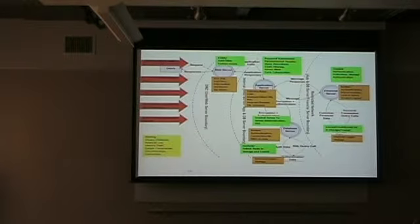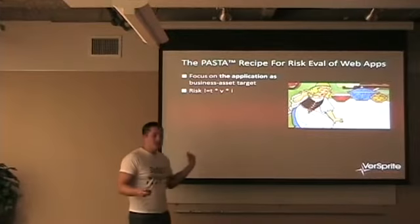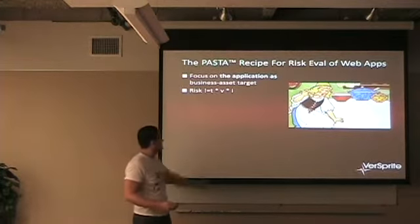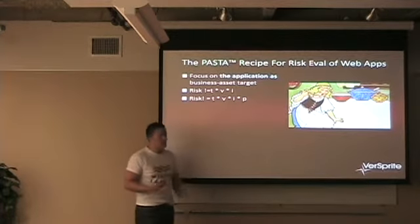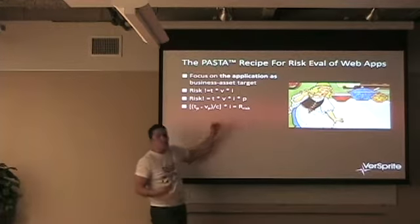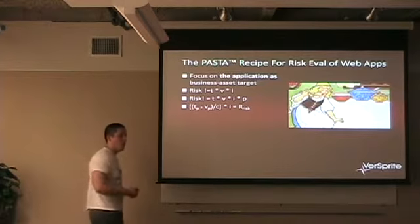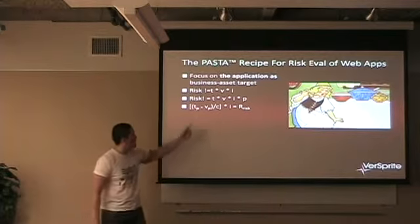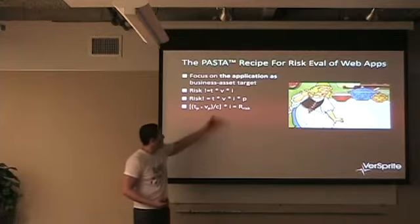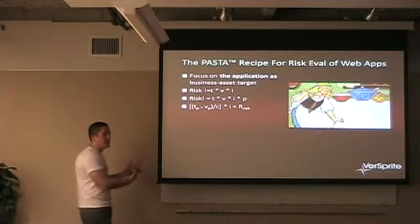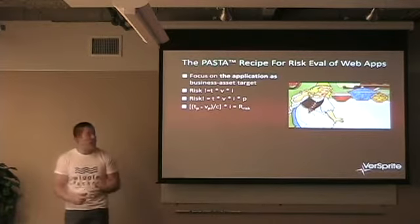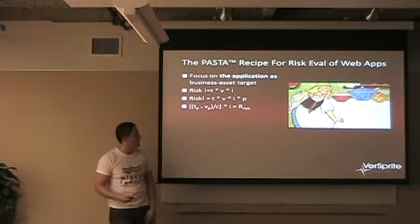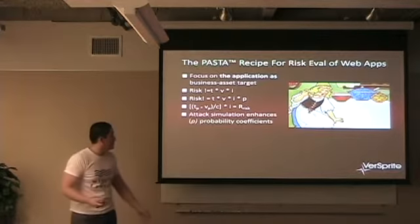The risk definition: threats times vulnerability times impact — some people just use impact alone, which I say is wrong. I prefer: risk equals impact times probability of threat occurring times probability of vulnerability being discovered, divided by countermeasures — that's residual risk, which is what you're really trying to get to. What is left over? You have inherent countermeasures from stage one as well as process or technology-based controls to factor in.